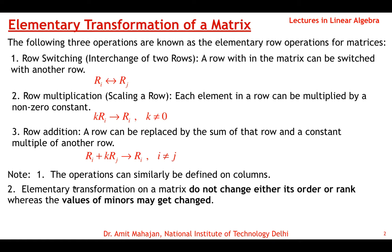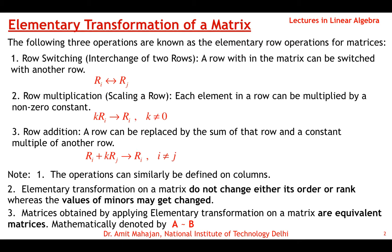An elementary transformation on any matrix will not change the order of the matrix — a 4×5 matrix remains 4×5 after any number of these operations. The rank of the matrix does not change, whereas the values of the minors may change because we are multiplying by a non-zero constant or adding rows. The rank of the matrix does not change when we apply elementary transformations.